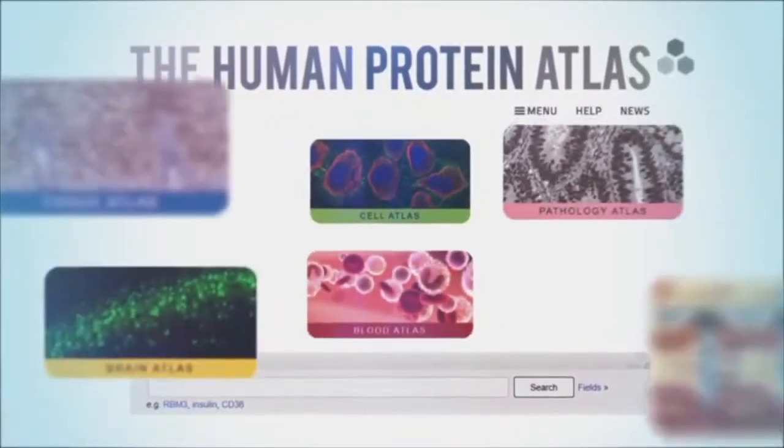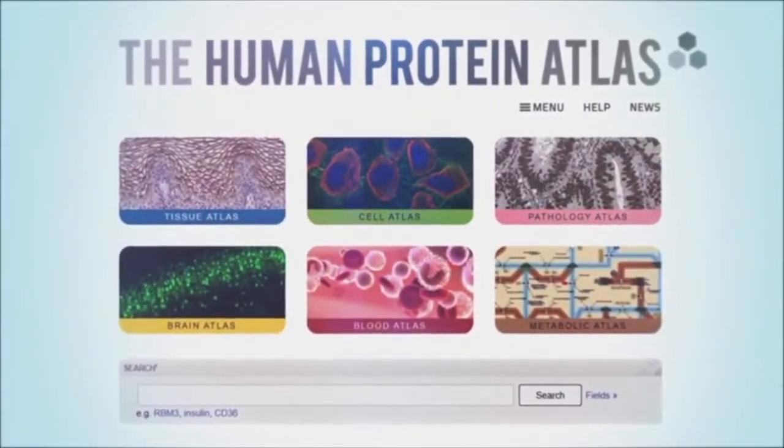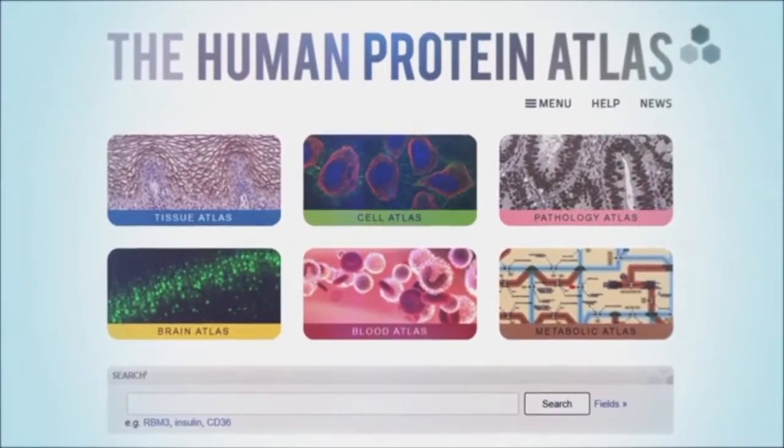The Human Protein Atlas consists of six different categories, each exploring different aspects of human proteins.